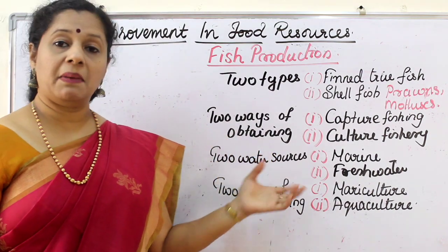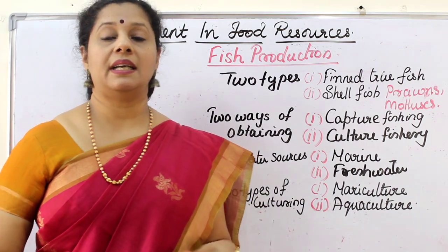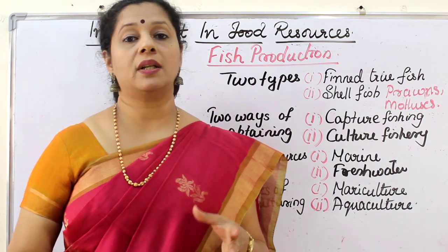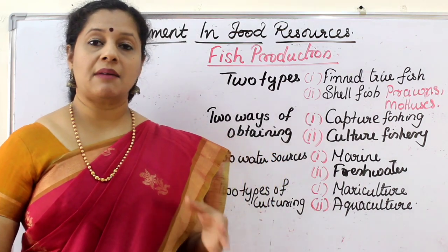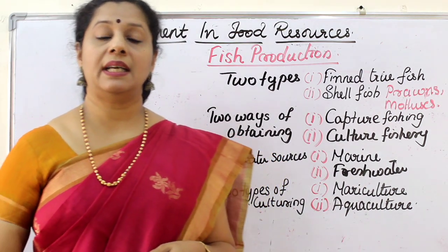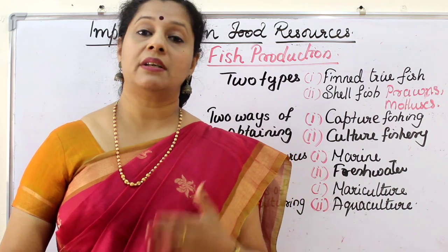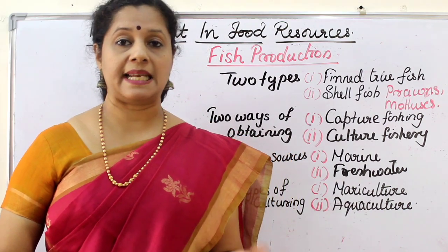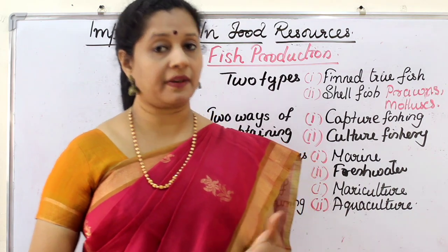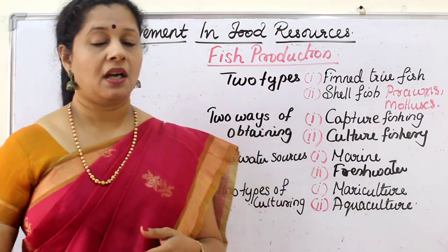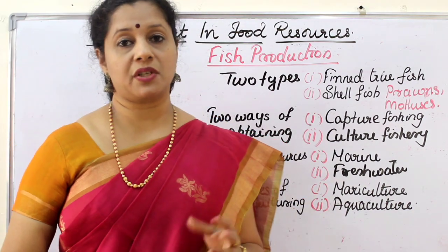Depending on the water source, there are two types of fish. Some fish can live only in sea water or marine water, which is salty. Whereas some fish cannot live in that — they can only live in fresh water, such as lakes, rivers, and ponds. So marine fish and freshwater fish are both farmed.